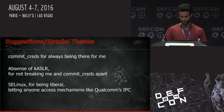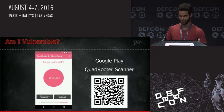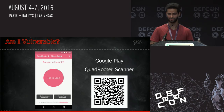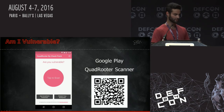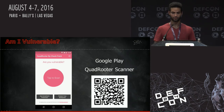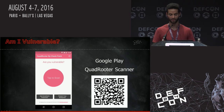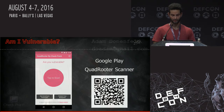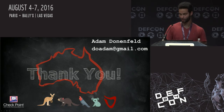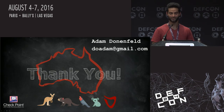We created an app called QuadRooter Scanner, which should be published now. You can use it to check if your device is vulnerable. For Shamanian Devil, you must be vulnerable, but for the rest you might be surprised. It's also searchable on Google Play — just search 'QuadRooter Scanner.' Thank you very much. I hope you enjoyed the presentation.